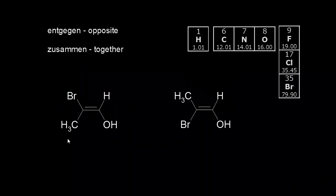If we look at the molecule on the left and try to use our cis-trans terminology, we quickly realize that we can't use it. To use cis-trans, we would need to have two identical groups to compare. But here we have four different groups attached to our double bond, so we need to use a different system to find the configuration of our double bond.